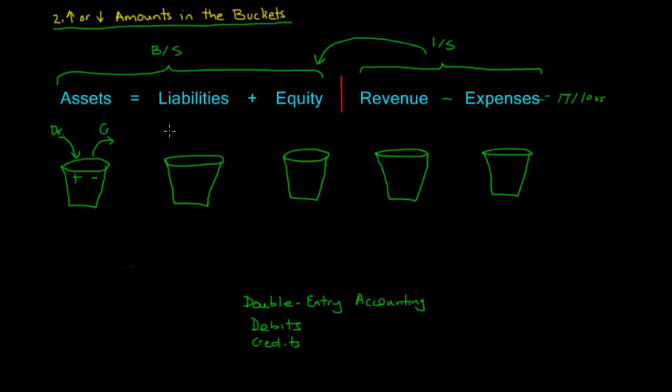Similarly, on the liability side, now, it's actually the opposite. When things are increasing the liability, it's a credit. And when they're decreasing the liability, or when it comes out of the liability, it's a debit. So it's the exact opposite of the asset.